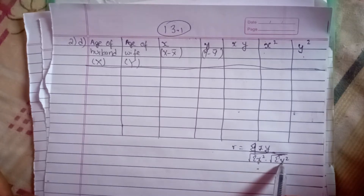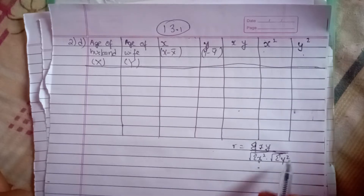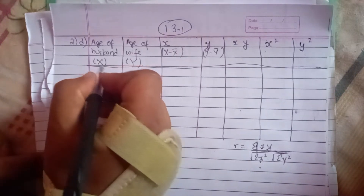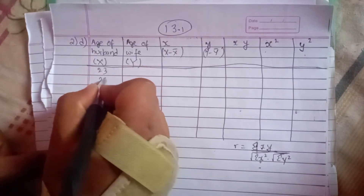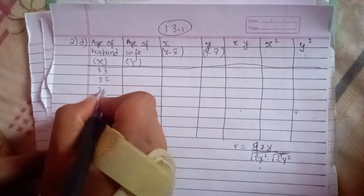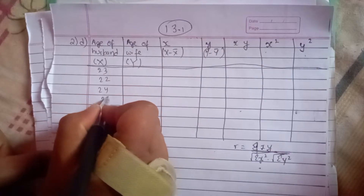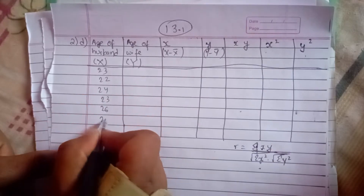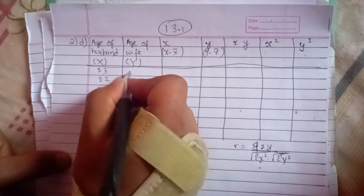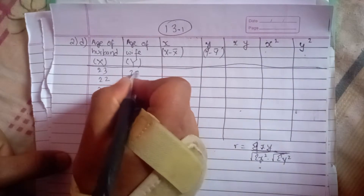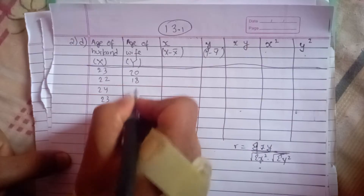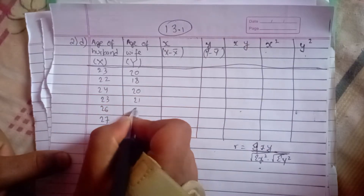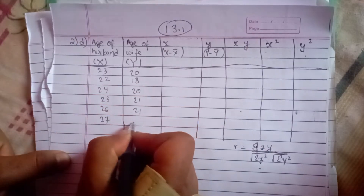The ages of husbands are: 23, 22, 24, 23, 26, 27. The ages of wives are: 20, 18, 20, 21, 21, 22.